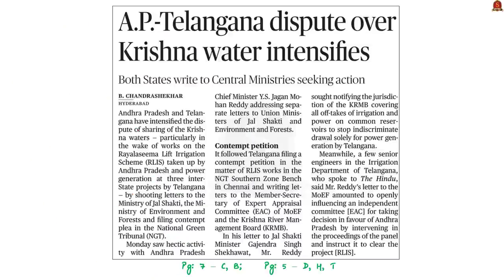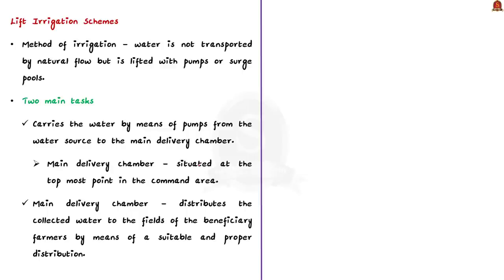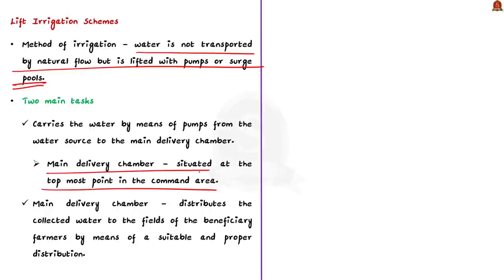According to the next article, Andhra Pradesh and Telangana have intensified the dispute over sharing of Krishna waters, particularly in the wake of works on the Rayalaseema lift irrigation scheme. Lift irrigation is a method of irrigation in which water is not transported by natural flow but is lifted with pumps and surge pools. Lift irrigation schemes achieve two main tasks: first, carrying water by means of pumps from the water source to a main delivery chamber at the topmost point in the command area; and second, distributing the collected water to the fields of beneficiary farmers through a suitable distribution system. Lift irrigation does not rely on gravity but on pumps and distribution systems.